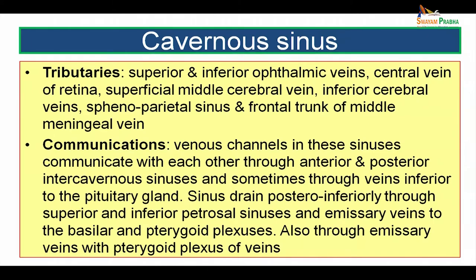The cavernous sinus receives venous blood from three areas: from the eyeball — the superior ophthalmic vein, inferior ophthalmic vein, and central vein of retina; from the brain tissue — the superficial middle cerebral vein and inferior cerebral veins; and from the meninges — via the sphenoparietal sinus and the frontal or anterior trunk of the middle meningeal vein.